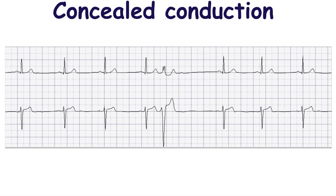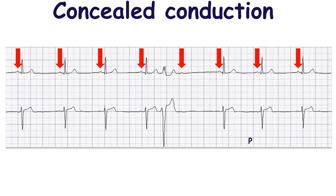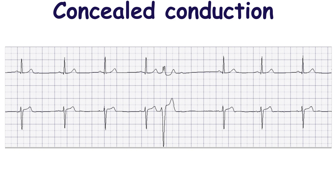In this ECG we see a premature ventricular complex followed by a P-wave which is not conducted through the atrioventricular node, but the next P-wave is normally conducted to the ventricles. It seems like second degree atrioventricular block, but it is strange that the phenomenon of non-conductibility of the P-wave occurs only after the premature ventricular complex in this patient.